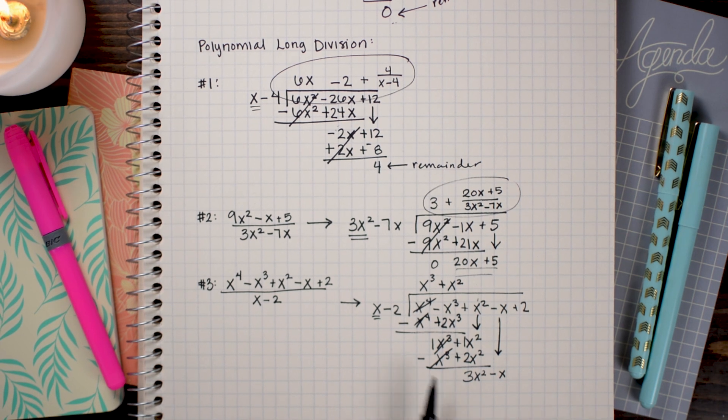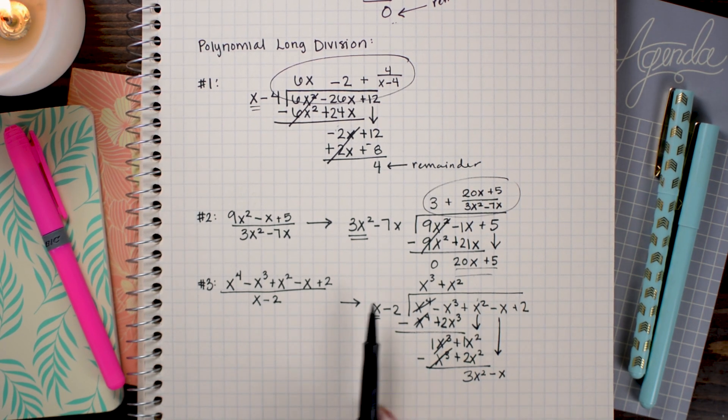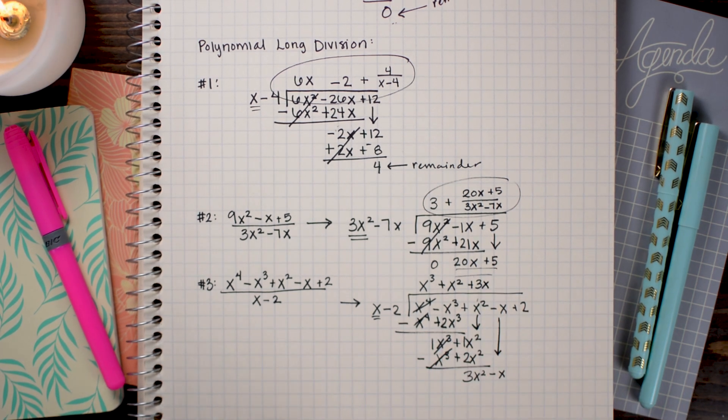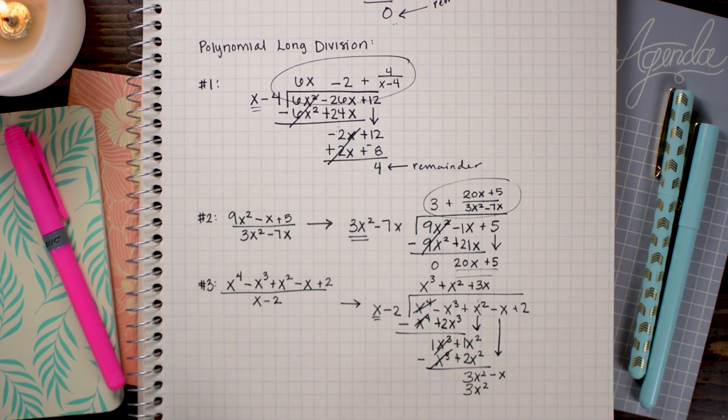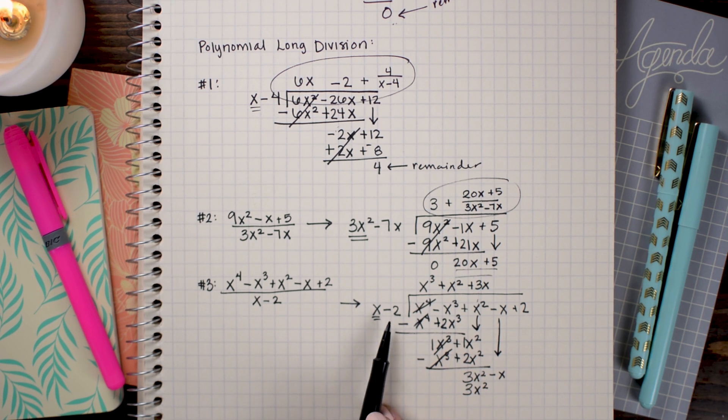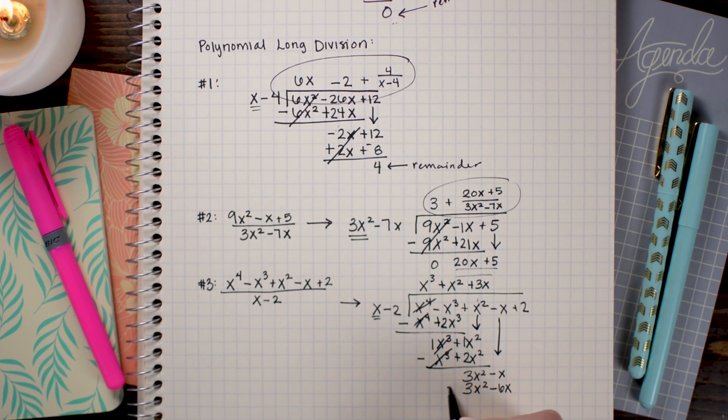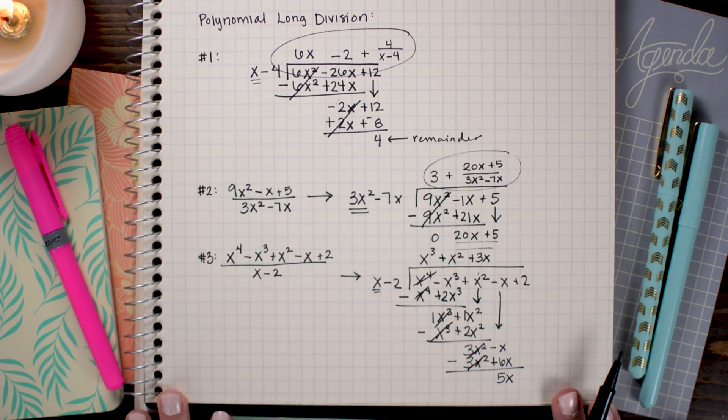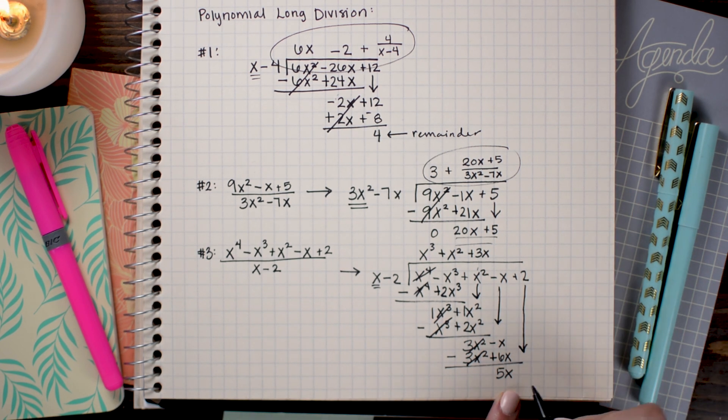What multiplied with x gives me 3x²? That would be a positive 3x. So I'm going to write +3x up here and then multiply it through. 3x times x is 3x². 3x times -2 is -6x. Again, I'm going to subtract.